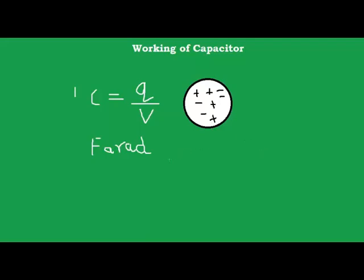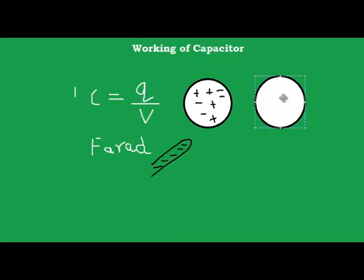If I bring a charged plastic rod near this sphere — this plastic rod is negatively charged — the positive charges are attracted towards this side and an equal amount of negative charges are repelled towards the other side. This is basically due to the attraction and repulsion between opposite charges.